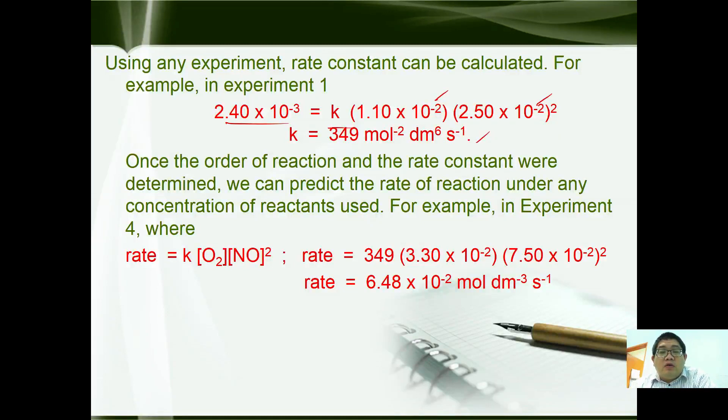Once the order of reaction and the rate constant are determined, we can predict the rate of reaction under any concentration of reactants used. For example, in experiment 4, where rate = k[O₂][NO]², rate = 349(3.30 × 10⁻²)(7.50 × 10⁻²)². At the end of the day, we get rate = 6.48 × 10⁻² mol dm⁻³ s⁻¹. Generally, this is how we determine the order of reactions.